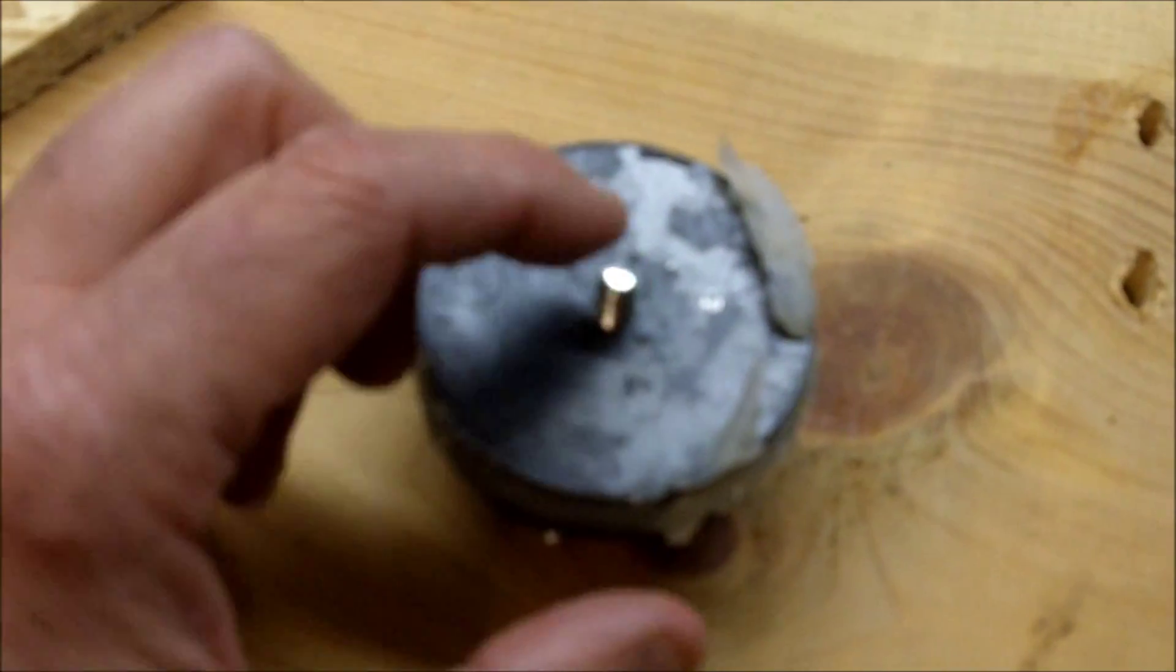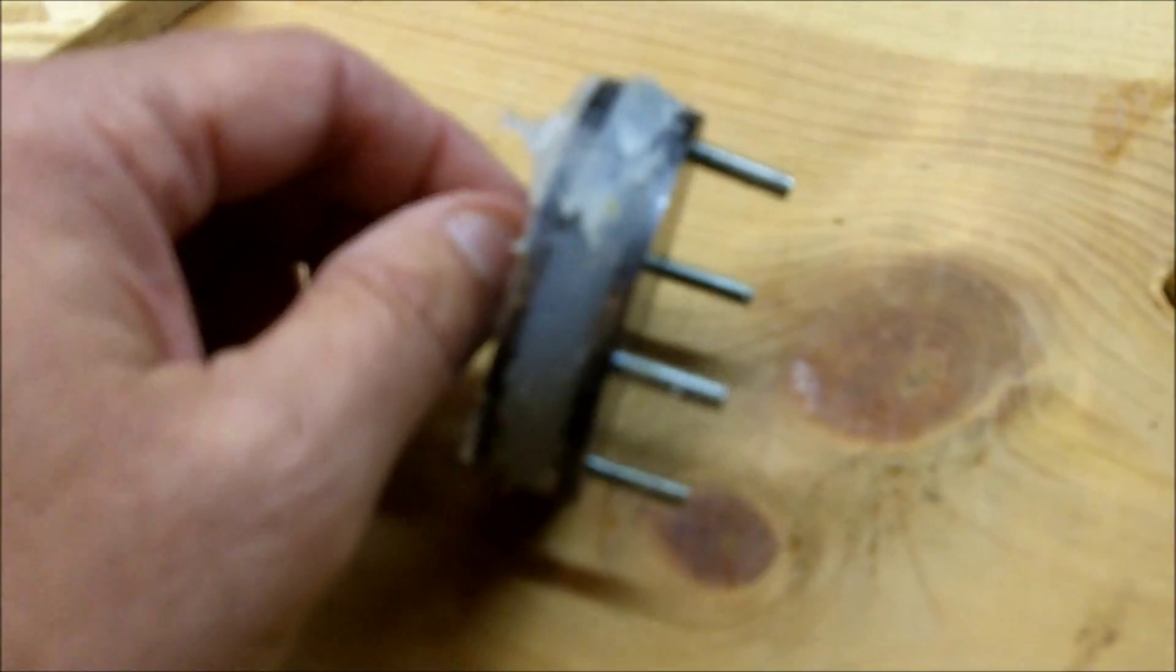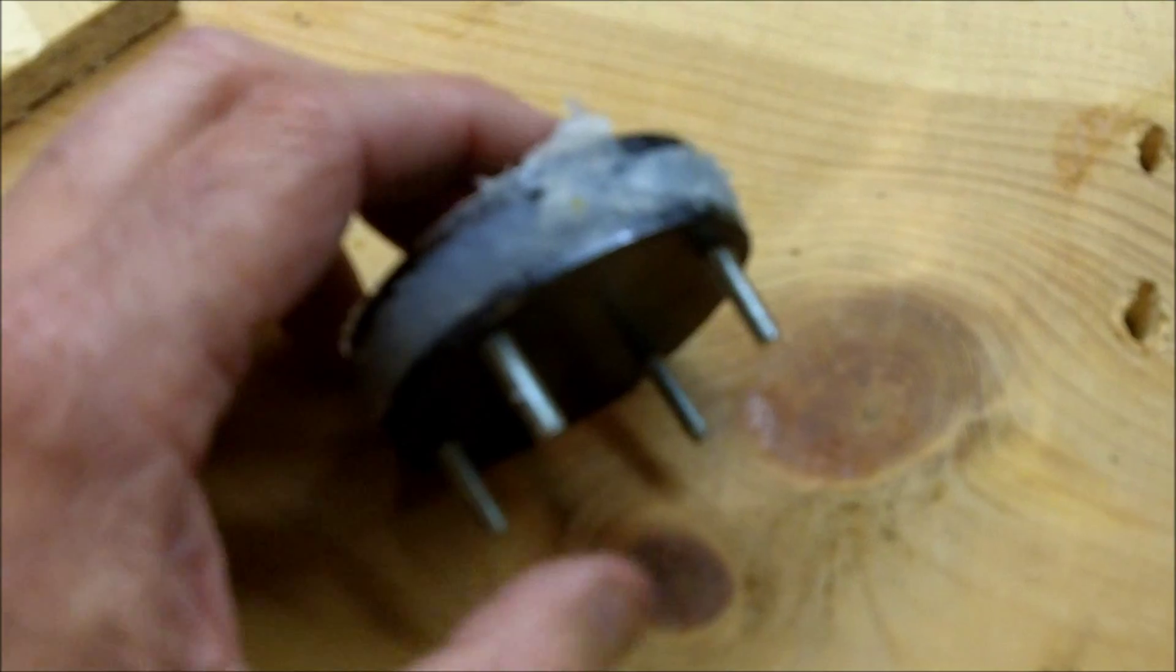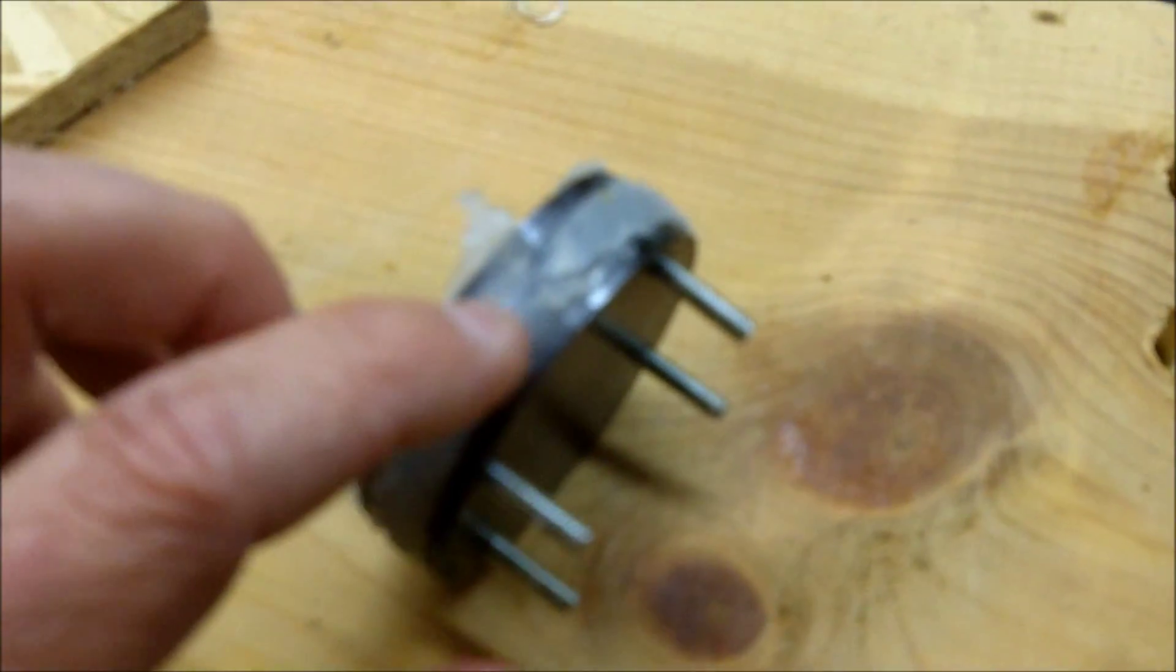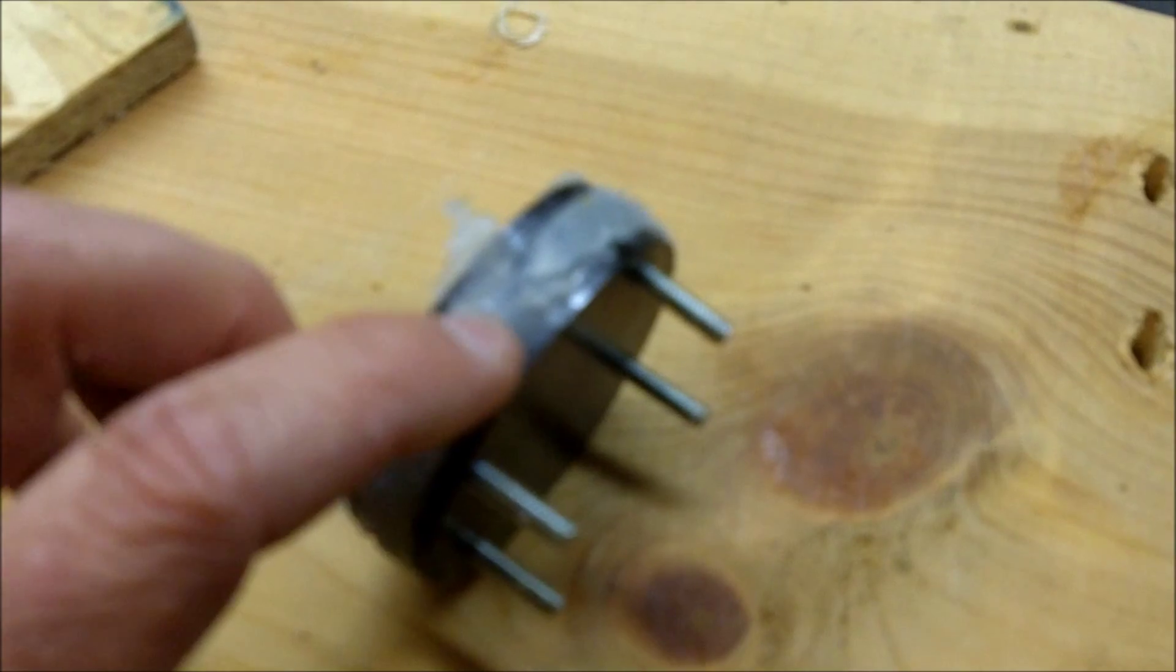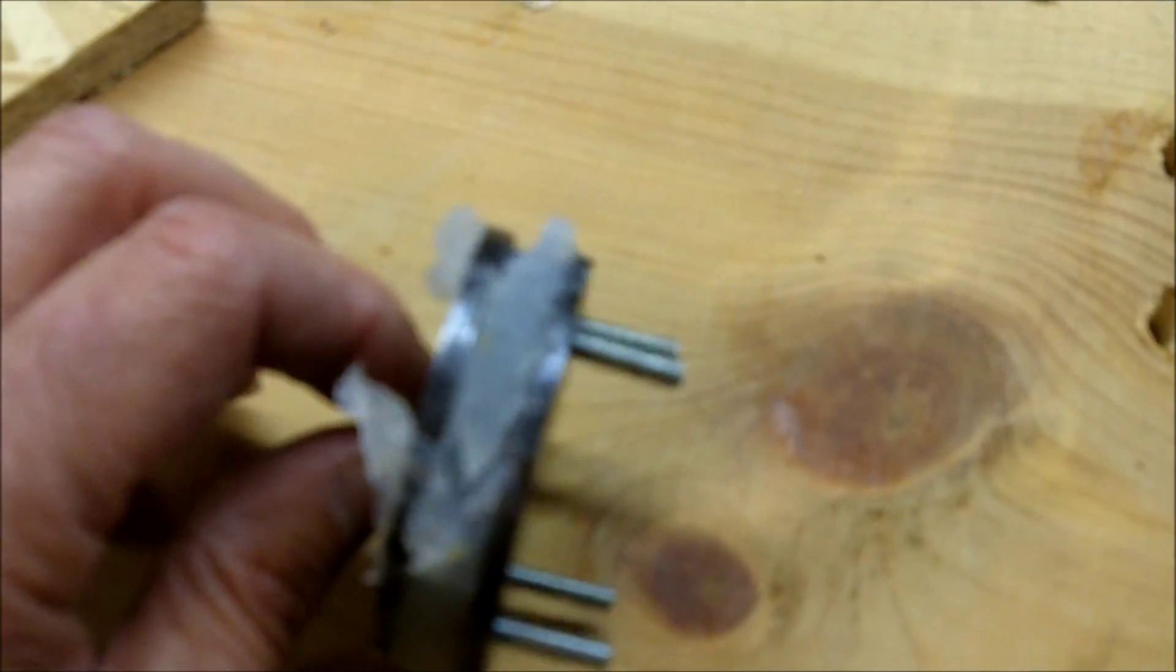So I do have some sorbathane, quarter inch thick, 30 durometer, which is a hardness. I'm going to get rid of this silicone and I'm going to glue the sorbathane in its place and give that a try.